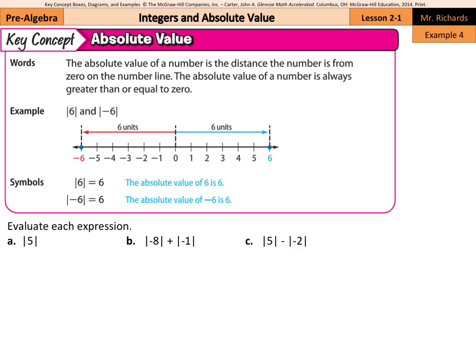The absolute value of negative six — here's negative six. Negative six is also one, two, three, four, five, six spots away from zero. So the absolute value of six is six, and the absolute value of negative six is also six. Remember, the absolute value of a number is always greater than or equal to zero — always going to be zero or a positive number, because distances are positive.